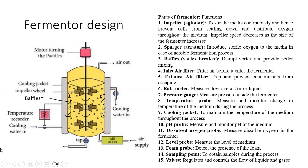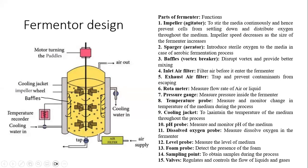We have a temperature probe, which records the temperature of the fermentation reaction. It has a sensor to record the temperature and also an effector. Because of the continuous fermentation process the reaction generally heats up, so a cooling reaction is often required. This cooling is achieved with the help of a cooling jacket that envelops the entire fermentation vessel. Cold water is circulated in the jacket through an inlet and an outlet, ensuring that if the temperature increases it will be lowered down.